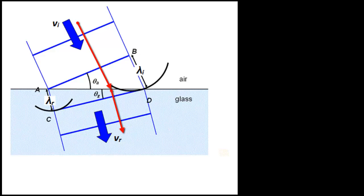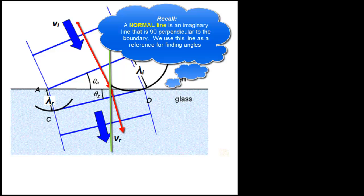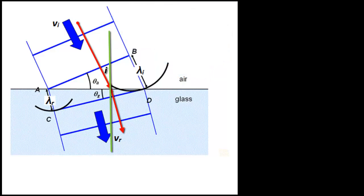We need to construct a normal line right where the two red lines meet the surface so we can measure some angles. The angle of incidence would be the angle right between the red and the green line at the top, and we're going to label that I.